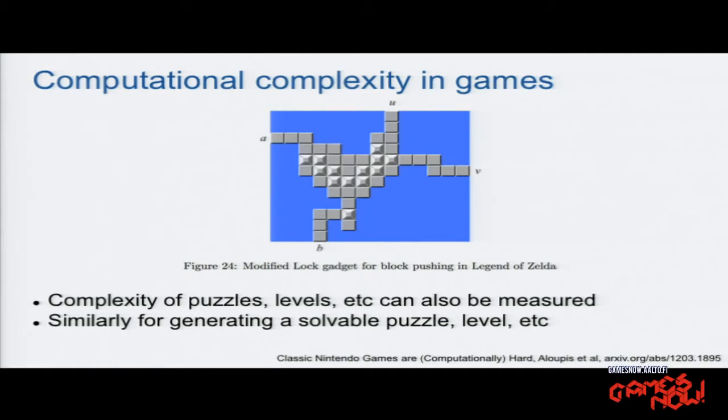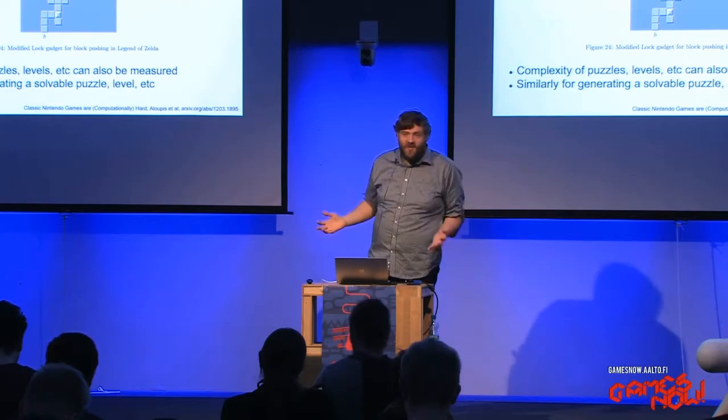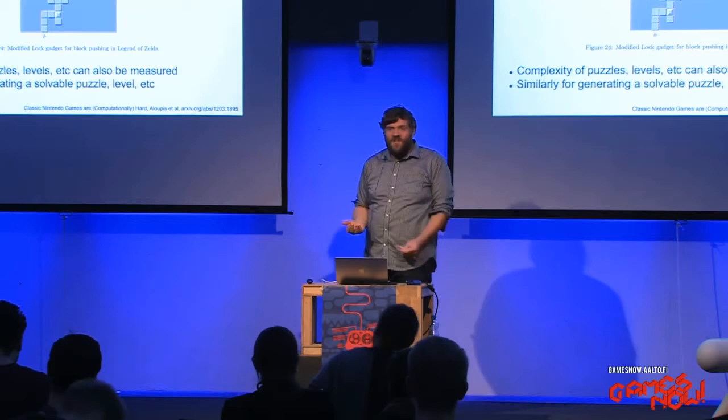There's a paper from a few years ago called 'Classic Nintendo Games Are Computationally Hard,' where researchers look at Super Mario Brothers, the first two Zelda games, Donkey Kong Country, and Metroid, and analyze the computational complexity of these games. They show that basic elements within these games can give you levels that are very hard to solve - specifically the decision problem: is it possible to solve this level or not?